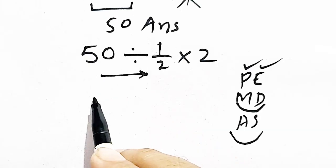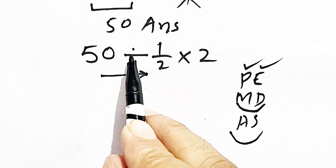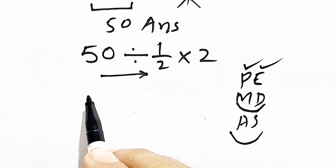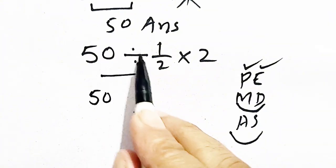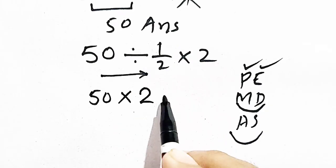So 50 divided by half. It is not 25. Remember that here is division.